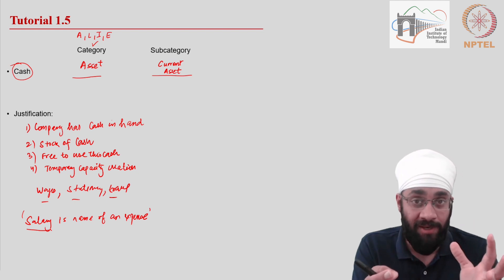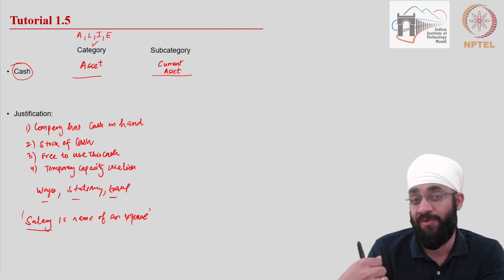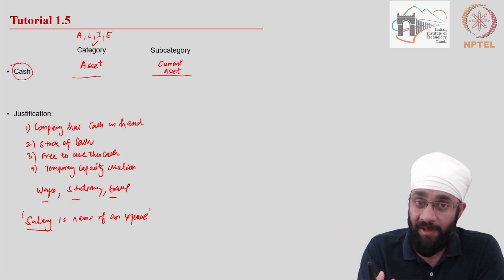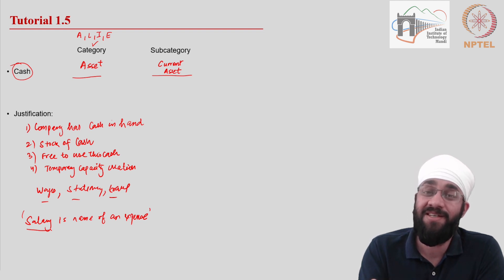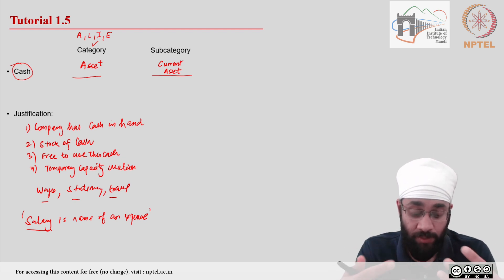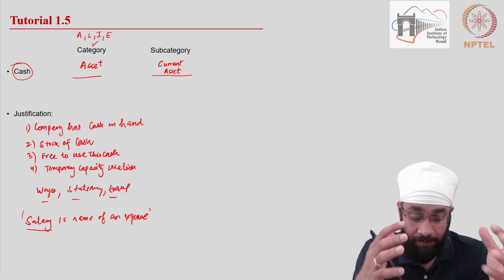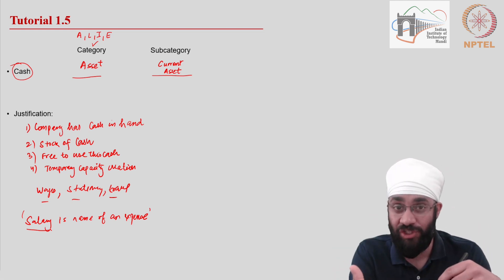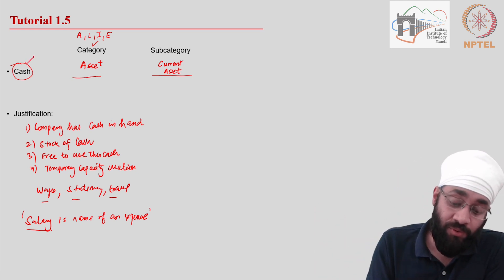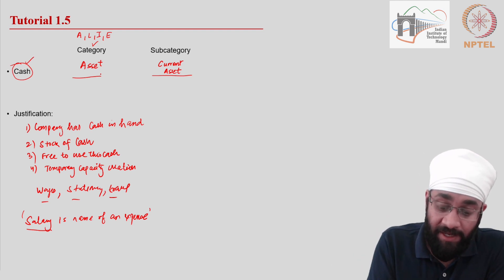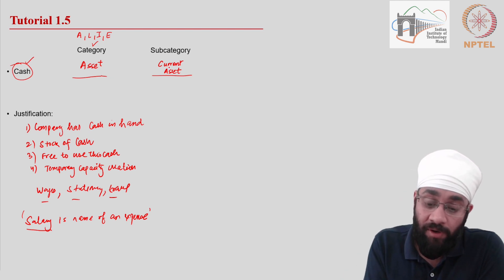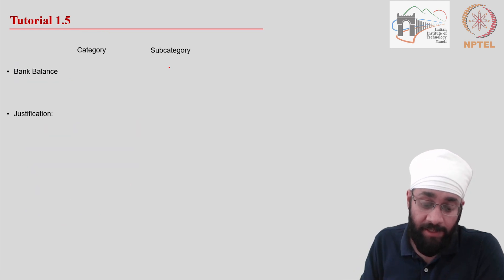You might say salary has come into your account, but actually what comes into your account is cash — money comes into your account because you have earned a salary. So what you really get is cash; why you get cash is because of your salary. Cash refers to the stock of money with you, and it helps you generate capacity in the short run. Therefore we call it a current asset.